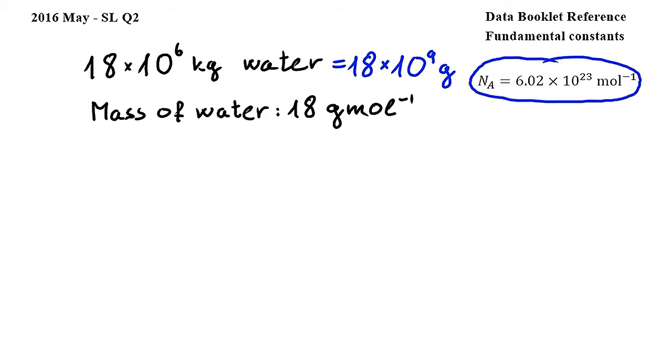Avogadro's constant, from the Fundamental Constants section of the data booklet, tells us that there are 6.02 times 10 to the power of 23 molecules per mole of substance. This means that in 18 grams of water, there are approximately 6 times 10 to the power of 23 molecules.